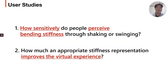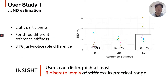We then had two questions. First, how sensitively do people perceive bending stiffness through shaking or swinging? And second, how much does appropriate stiffness representation improve the virtual experience? To answer the first question, we conducted a JND study with eight participants. We measured JND for three different reference stiffness values and found that mean JND is under 30% change in the worst case, which means users can distinguish at least six discrete levels of stiffness in Elastic's rendering range.